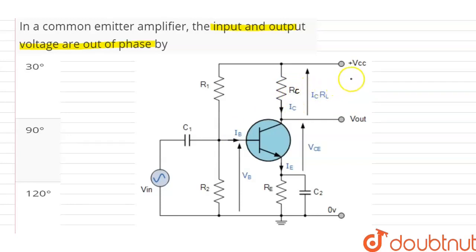The net collector voltage is Vcc minus the drop across the collector resistance RC. When drop across RC increases, collector voltage decreases.